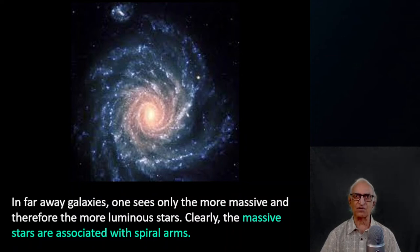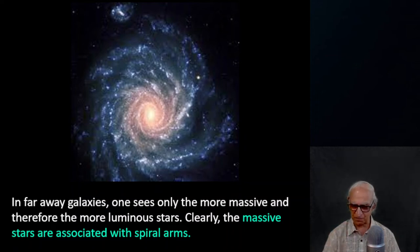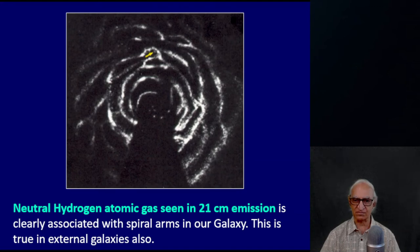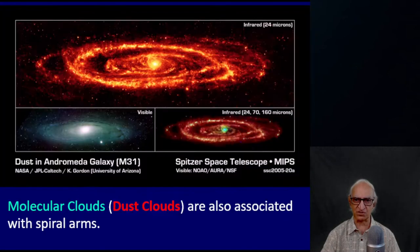Bertil Lindblad's point was that the stars in the spiral arms are not the same stars — they keep changing. Here is the neutral hydrogen map of our galaxy taken in the 21-centimeter emission of the neutral hydrogen atom. Quite clearly, the neutral hydrogen gas clouds are associated with spiral arms, just as the massive stars were.